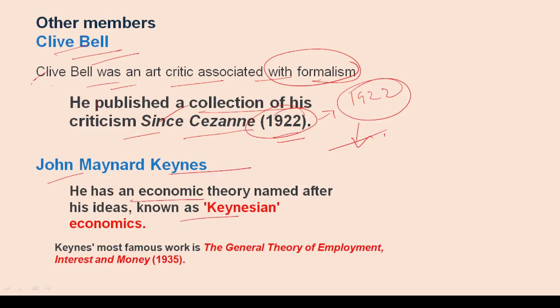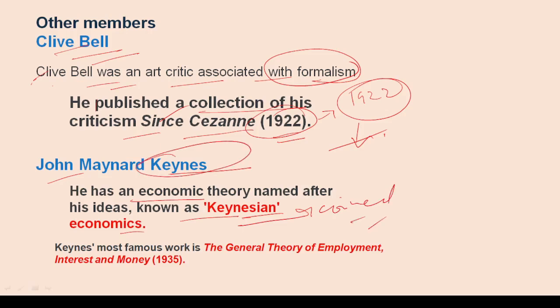John Maynard Keynes has an economic theory named after him known as Keynesian economics — this term was coined because of his last name, Keynes. His most famous work was The General Theory of Employment, Interest and Money, published in 1936.